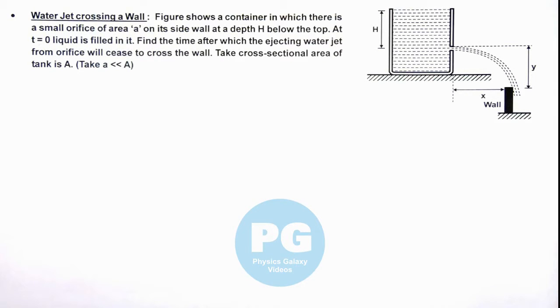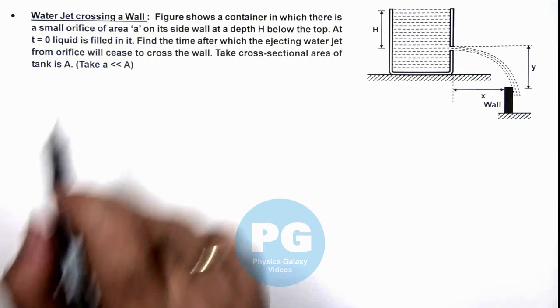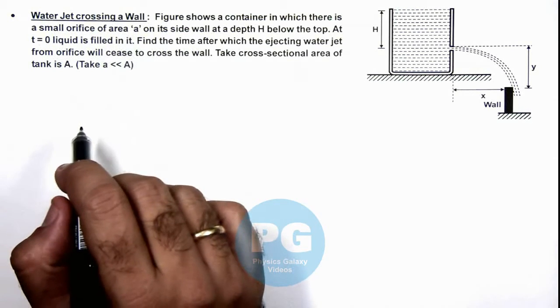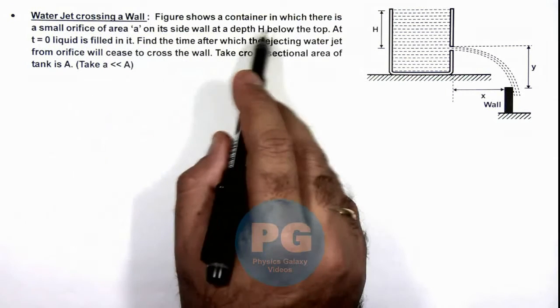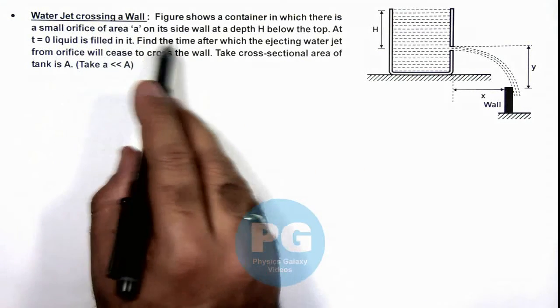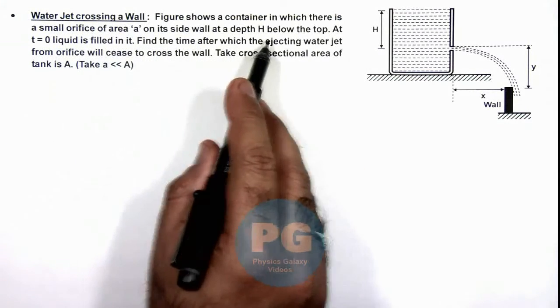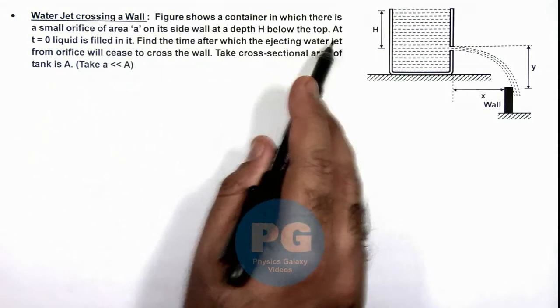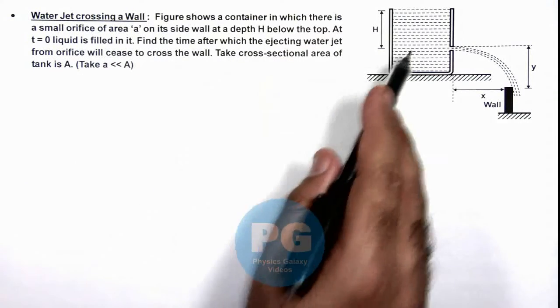In this illustration, we'll analyze a water jet crossing a wall. The figure shows a container in which there is a small orifice of area a_y on its side wall at a depth h below the top, and at t=0 liquid is filled in it.